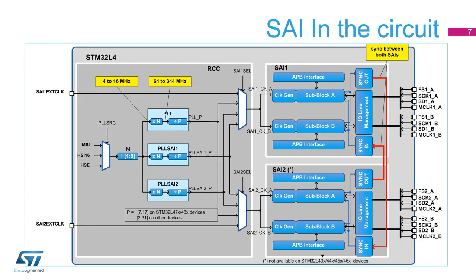The STM32L4XX embeds two SAIs. Each SAI can receive a kernel clock, SAINCKX, from one of the three internal PLLs or from the pads, SAIN-EXT-CLK. The kernel clock is used by the SAI in order to generate the timing of the serial audio interface when programmed in master mode.